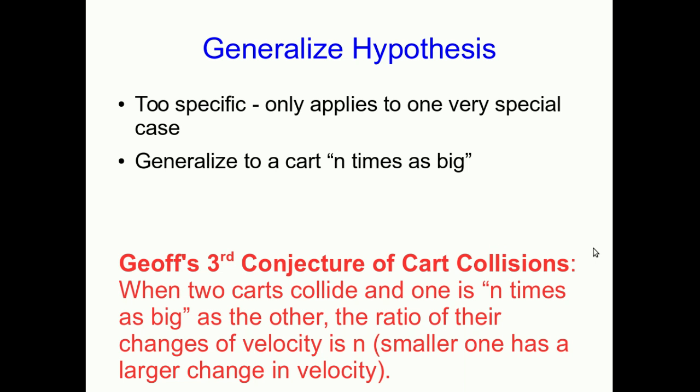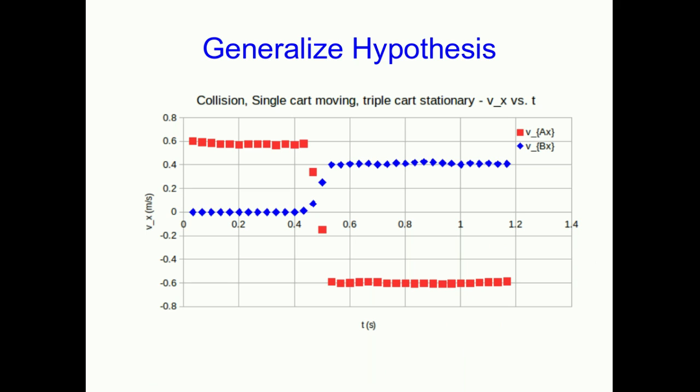We can do lots more collisions, but I'll spare you having to watch all of those. I'll just give you one example. Here's a collision of a single cart with triple cart and you can see that the ratio of the delta V's is a ratio of three.